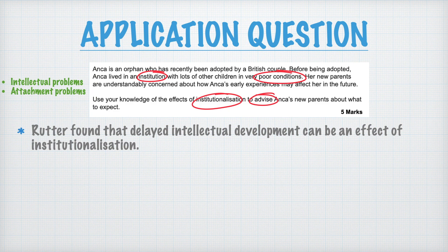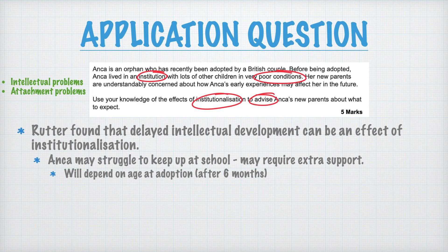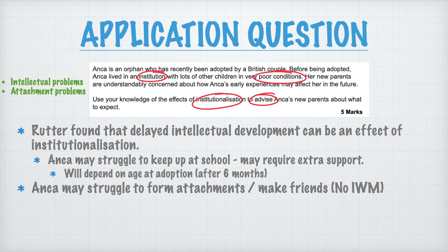You're advising Anka's parents, so the fact that Rutter found delayed intellectual development is great — but what does that mean for Anka? It means she may struggle to keep up at school, may require extra support, or be behind her peers. It will depend on her age at adoption; if she was adopted after six months, this is more likely. You could also talk about attachment issues and bring in a little Bowlby — there's nothing wrong with crossing over topics. You could say Anka may struggle to form attachments or make friends because her internal working model isn't fully developed, as she wouldn't have had a primary caregiver in the institution.